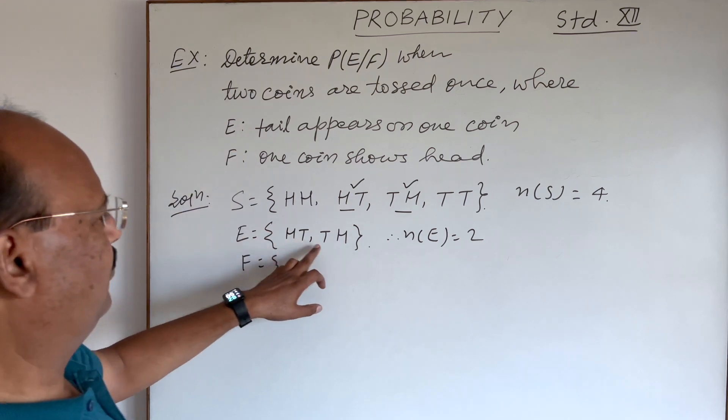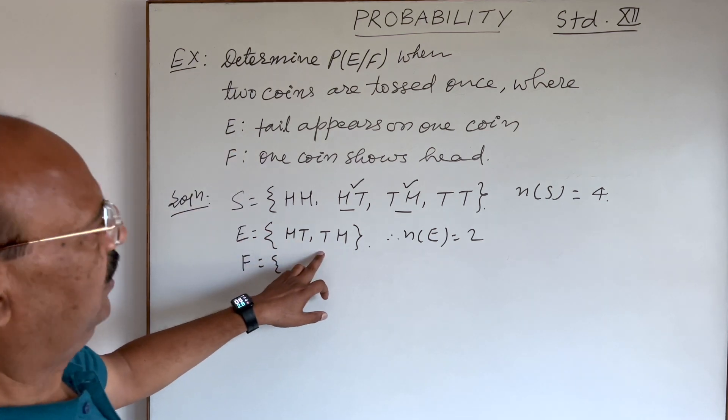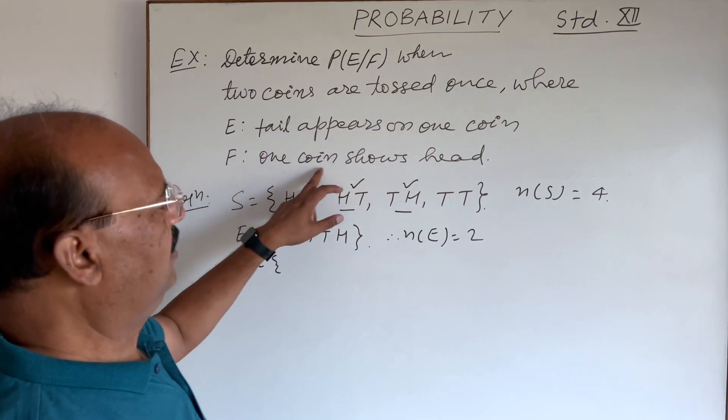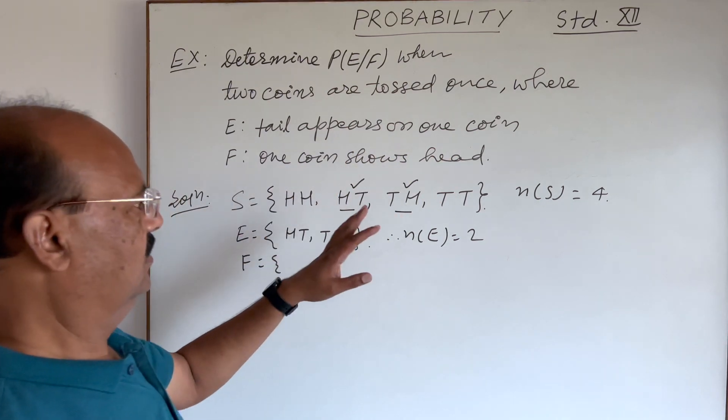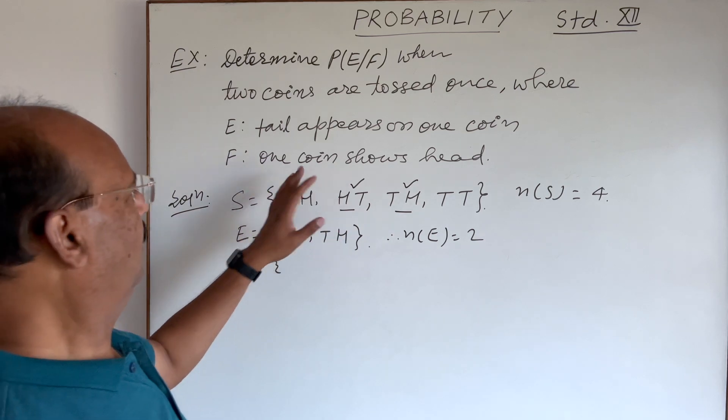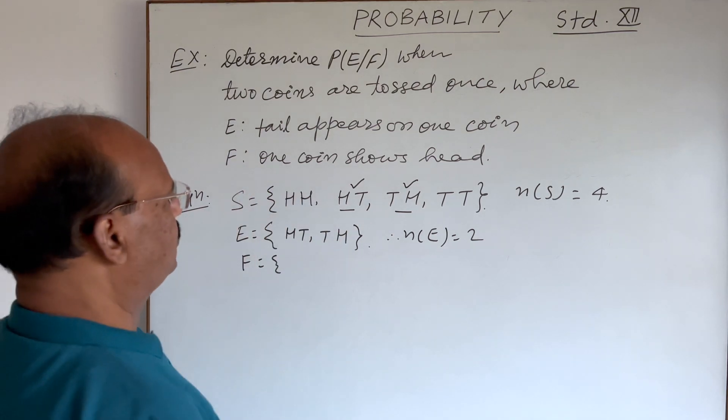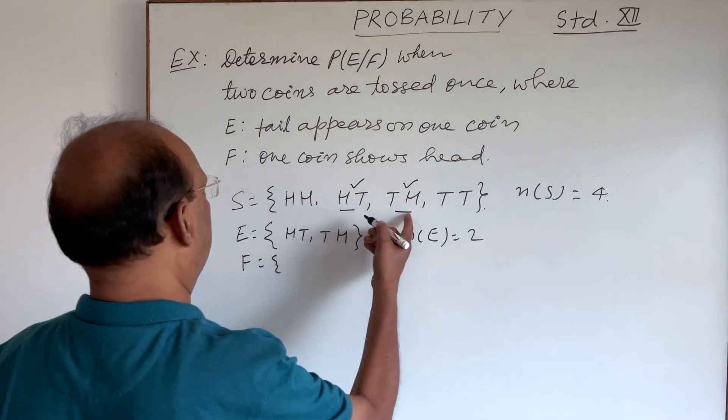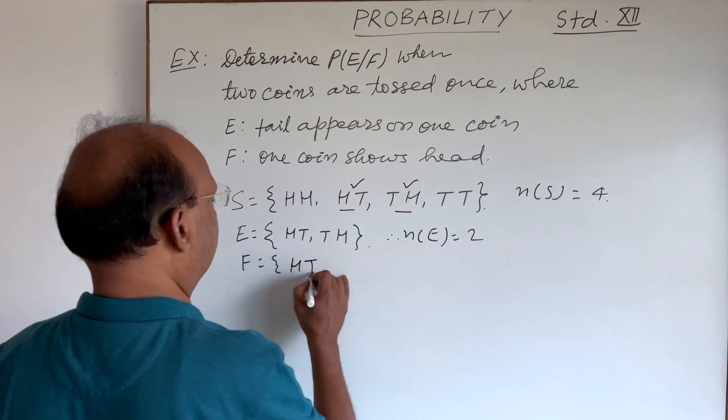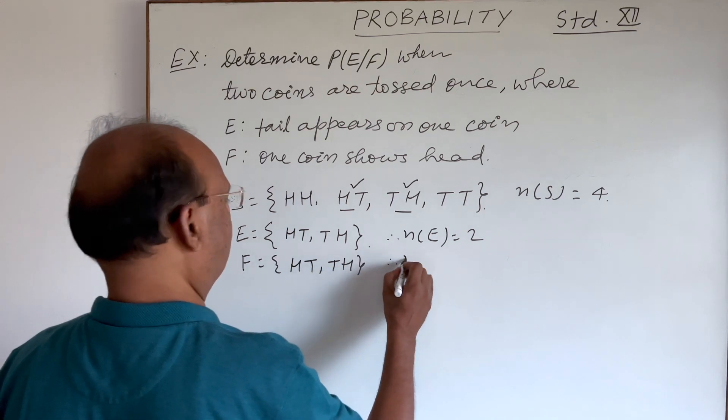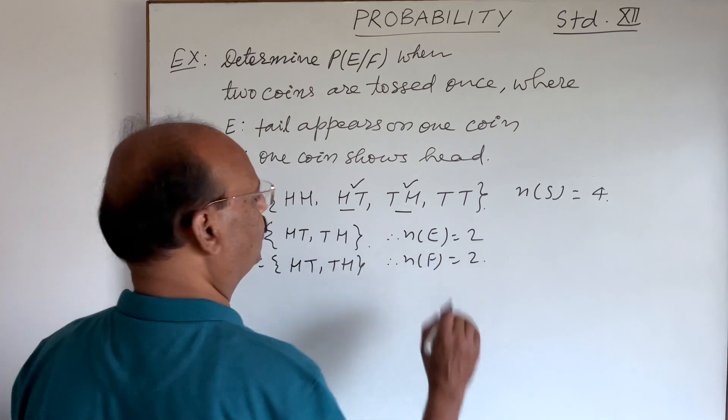So you see tail is appearing here on any one of these two coins. And F, one coin shows head. Only one coin shows head. So this will be again same elements, HT and TH. So therefore here n(F) is also 2.